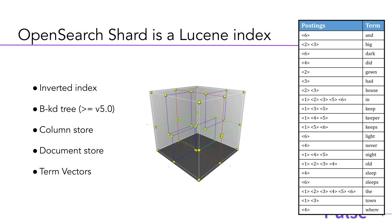Every index in Elasticsearch and OpenSearch is essentially a Lucene index. Lucene is a Java library at the core of OpenSearch — that's what OpenSearch is built on. OpenSearch is really maintaining a lot of Lucene indexes, and each Lucene index is what you know as an OpenSearch shard. A single OpenSearch index usually has one shard, meaning it has one Lucene index under the hood.